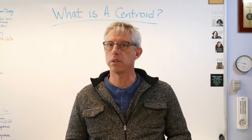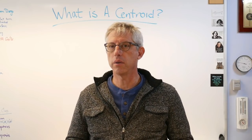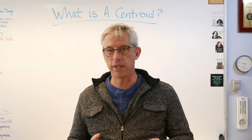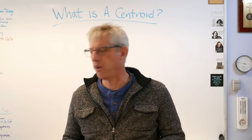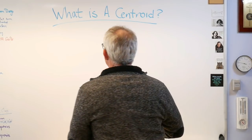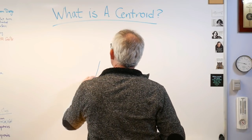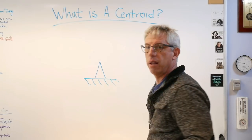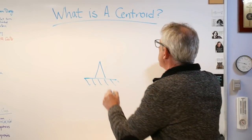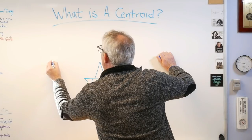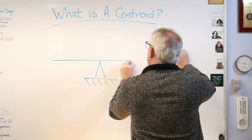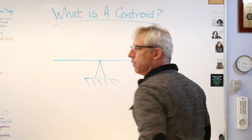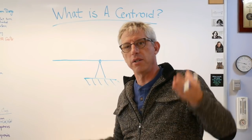I think we all already know what centroids are — we just didn't know what they were called. How many of you have been on a seesaw or teeter-totter? Here's what they look like: there's a pivot in the middle, a bar that goes back and forth, and a seat on each end. This thing can go back and forth.